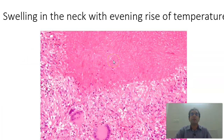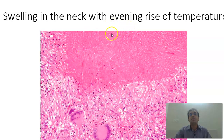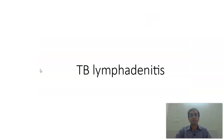Next case is swelling in the neck with evening rise of temperature. What you find here is caseous necrosis in the slide, Langhans-type giant cells, and slipper-shaped nuclei of the epithelioid cells. All this put together points towards a tuberculous granuloma. The history is also very classical — evening rise of temperature. It is tuberculous lymphadenitis.